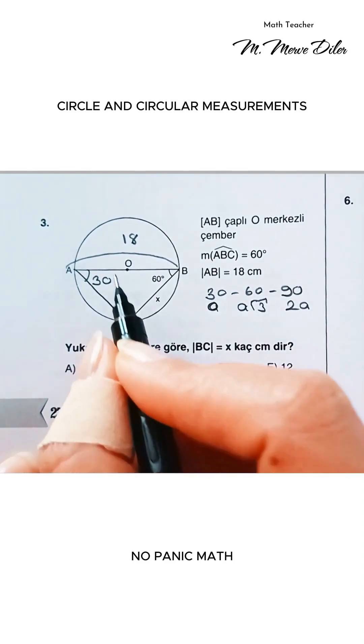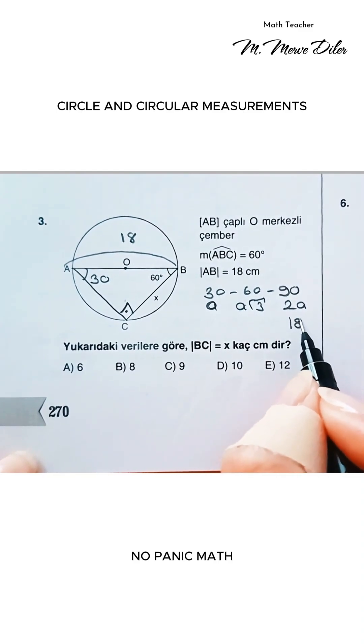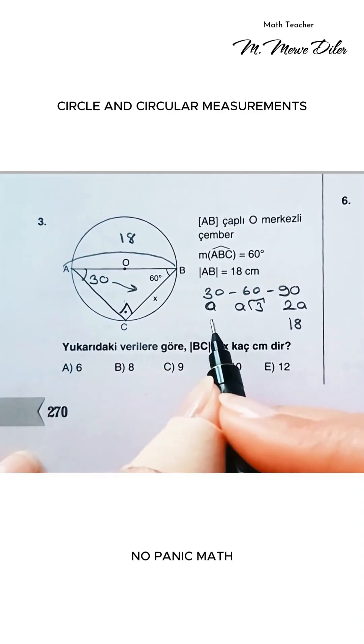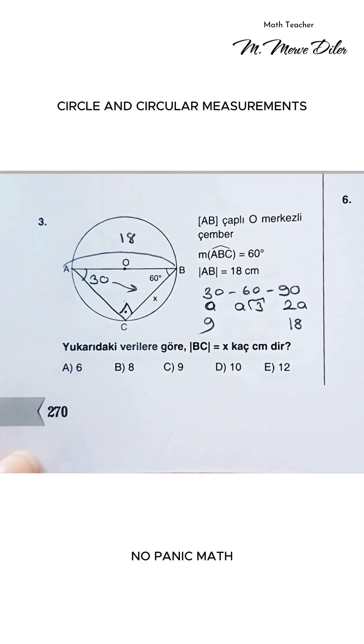Now, since the side opposite 90 is already 18, they're asking for the side opposite 30. That's what they're asking. This part corresponds to 30, so it will be half. That's 9 centimeters.